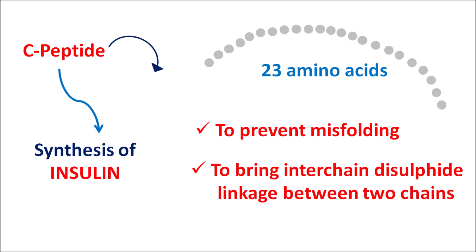Whenever C-peptide levels are elevated, it is associated with increased synthesis of insulin. In this way, C-peptide levels give an indication of the turnover of insulin synthesis. In this video, we will discuss the significance of the C-peptide test, how it is released, the normal levels, and in which conditions it is elevated or lowered.